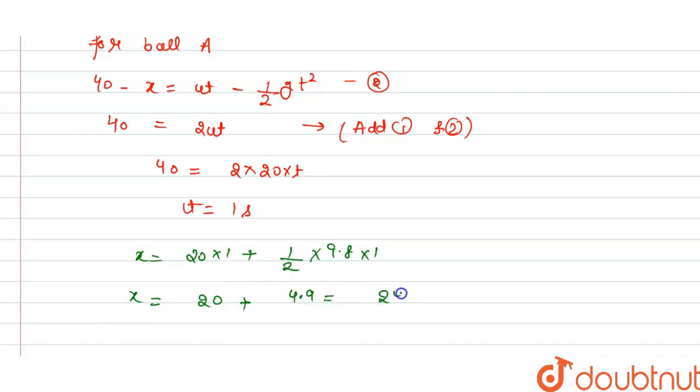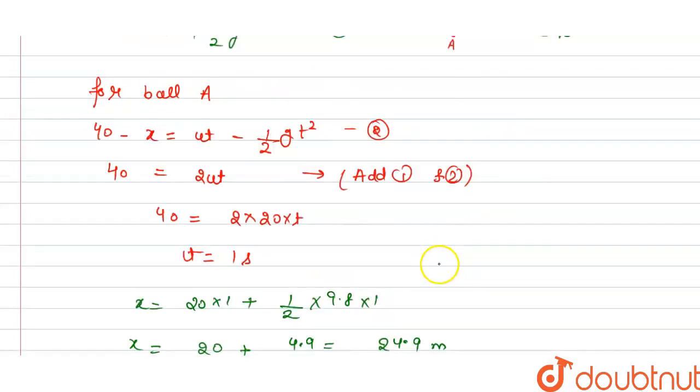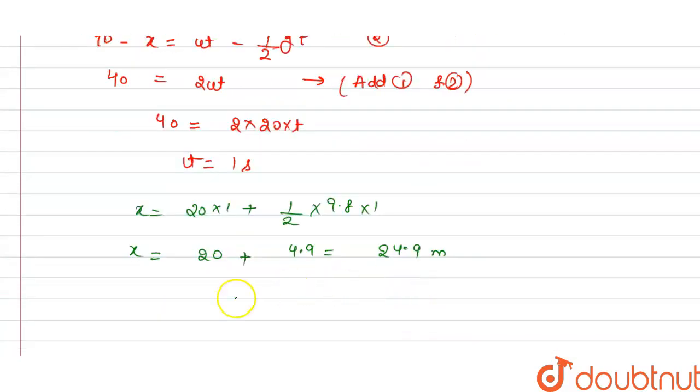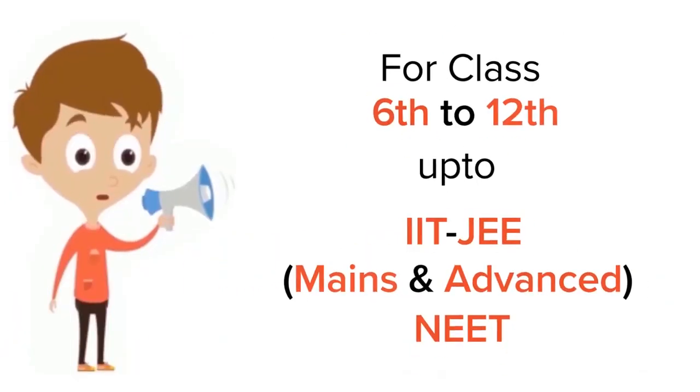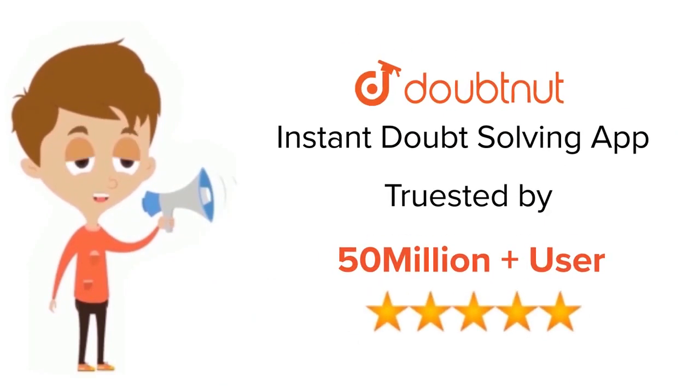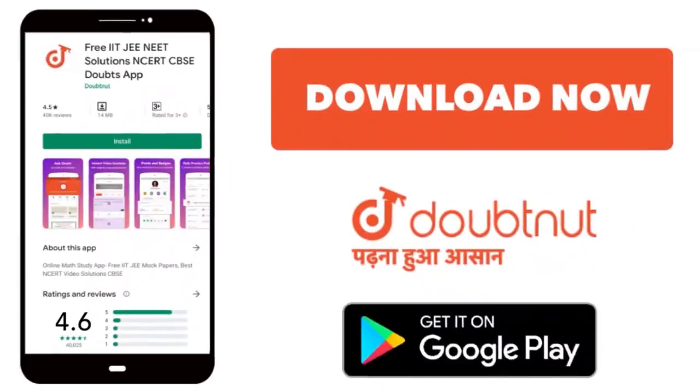This is 24.9 meters. So this is the distance of x. This is the answer for this question. Thank you. For class 6 to 12, IIT, and NEET level, trusted by more than 5 crore students, download Doubtnut app today.